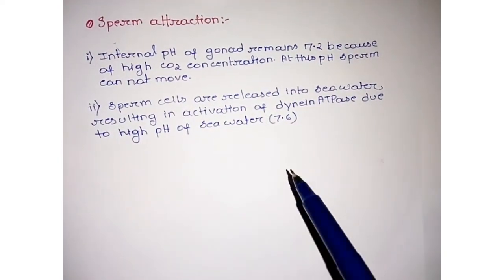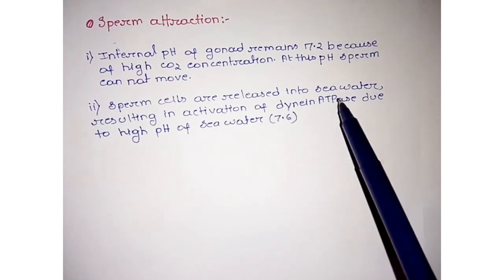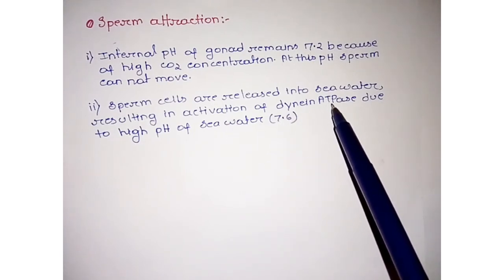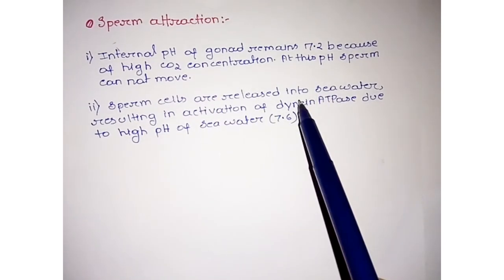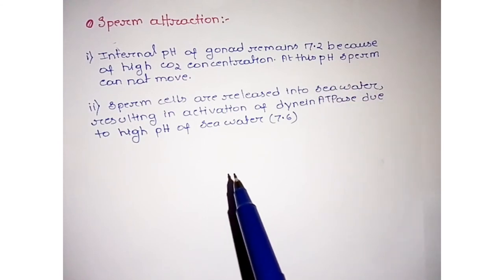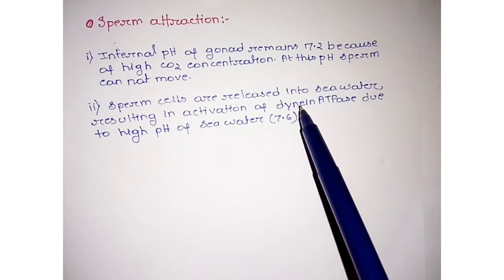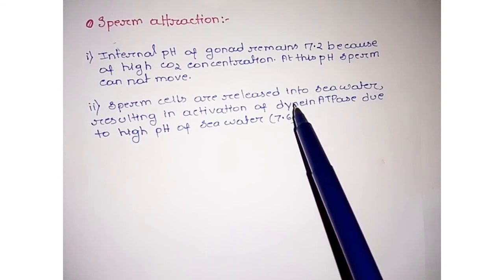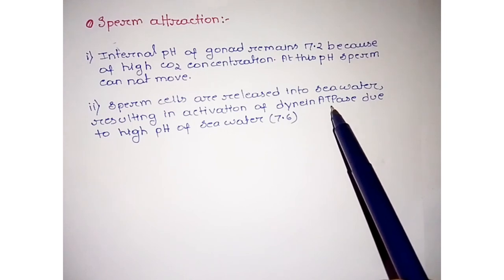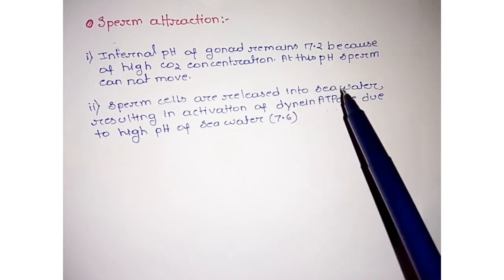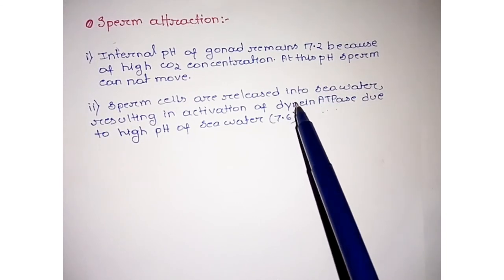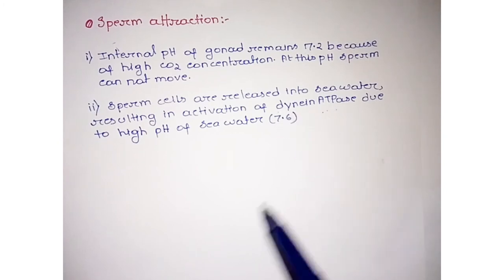At normal pH, the dynein ATPase does not remain in its active form. But when the sperm are released in seawater, activation of dynein ATPase occurs. This is very important - dynein ATPase.